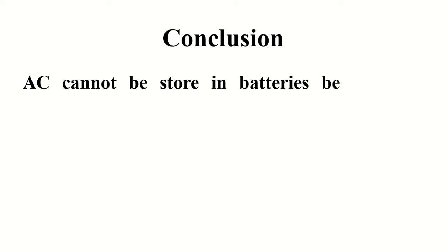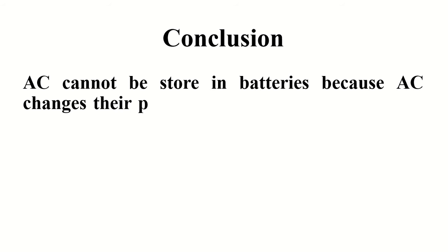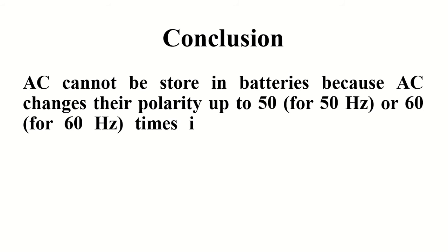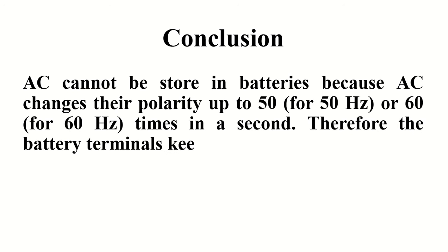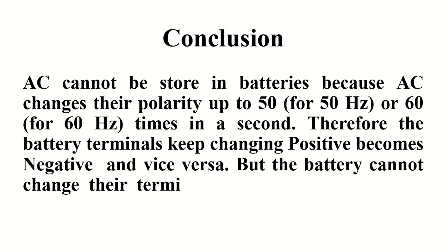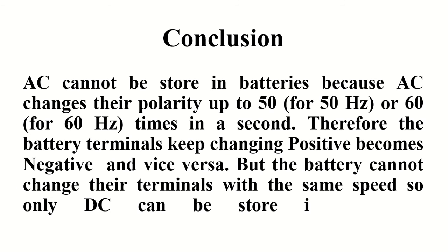Conclusion: AC cannot be stored in batteries because AC changes its polarity 50 times per second (for 50 Hz) or 60 times per second (for 60 Hz). Therefore the battery terminals keep changing — positive becomes negative and vice versa — but the battery cannot change its terminals at the same speed. So only DC can be stored in batteries.